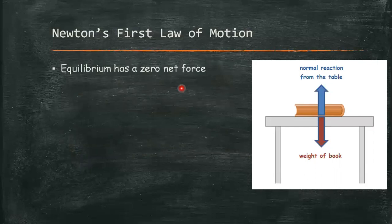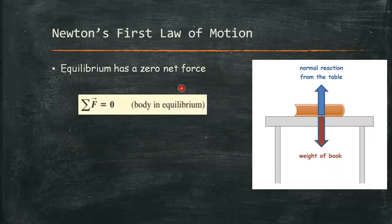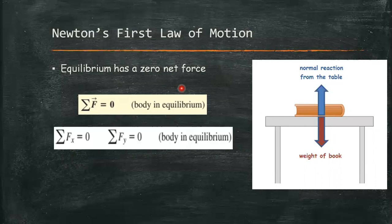For a body to be in equilibrium, it must be acted on by zero net force. Therefore, the summation of all the forces acting on that body is equal to zero, or simply the x component and y component of that resultant vector or the summation is equal to zero. Then we can say that body is in equilibrium state.